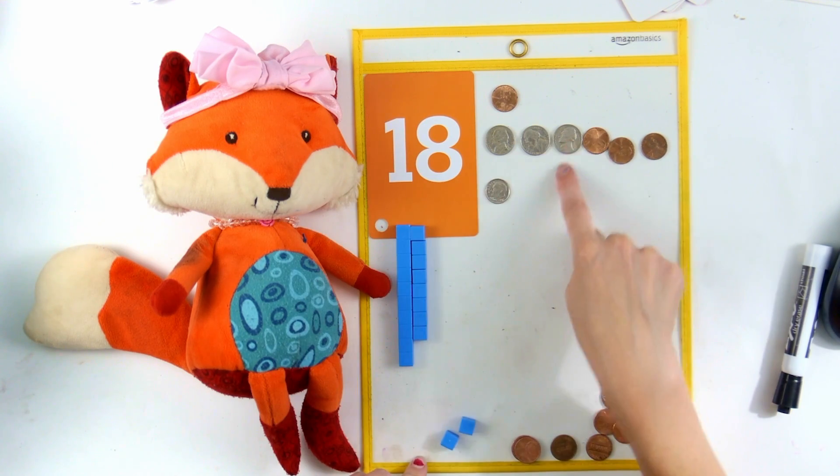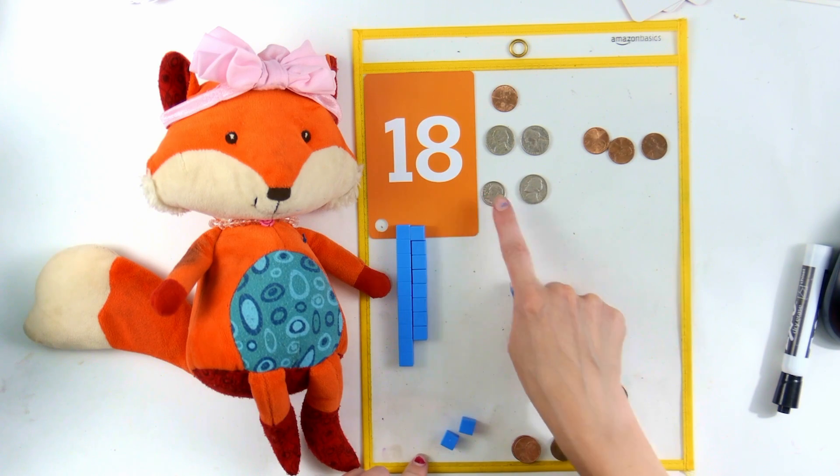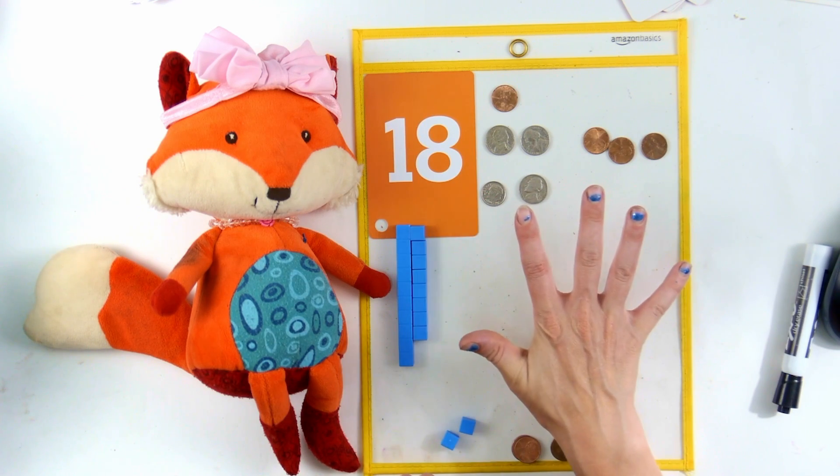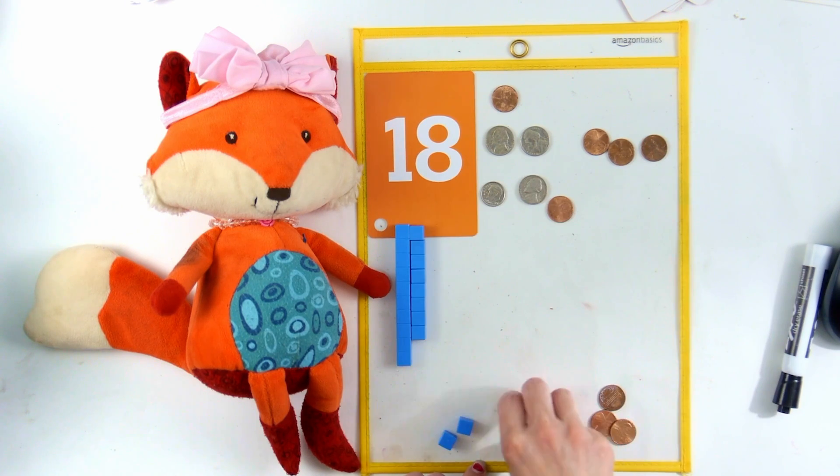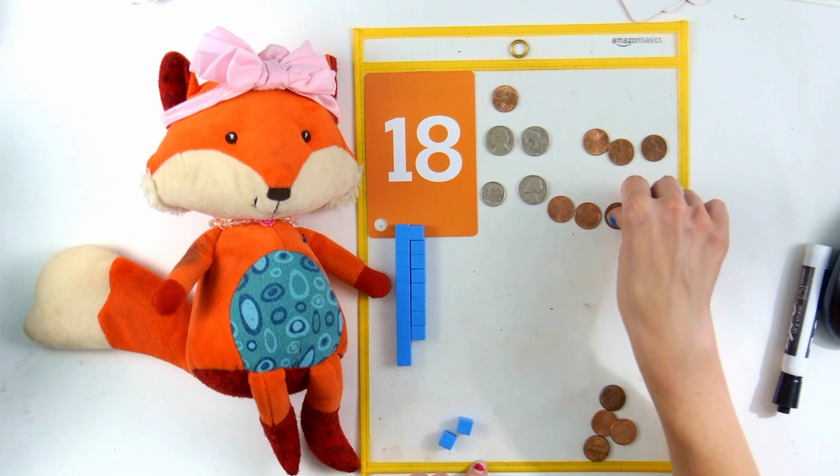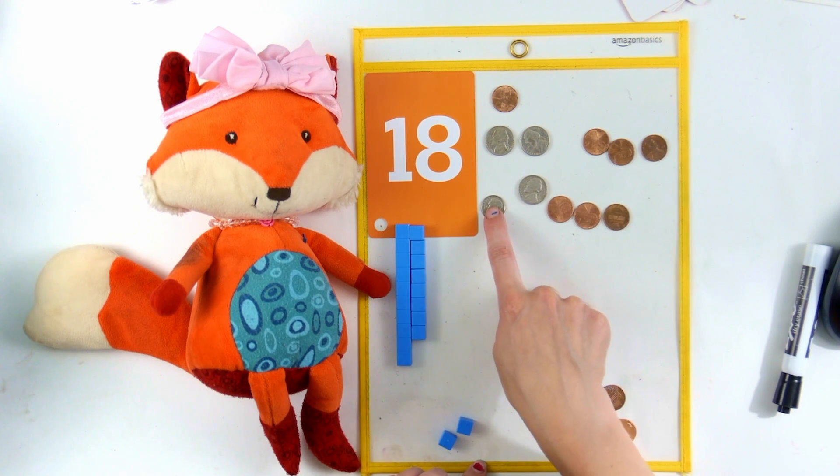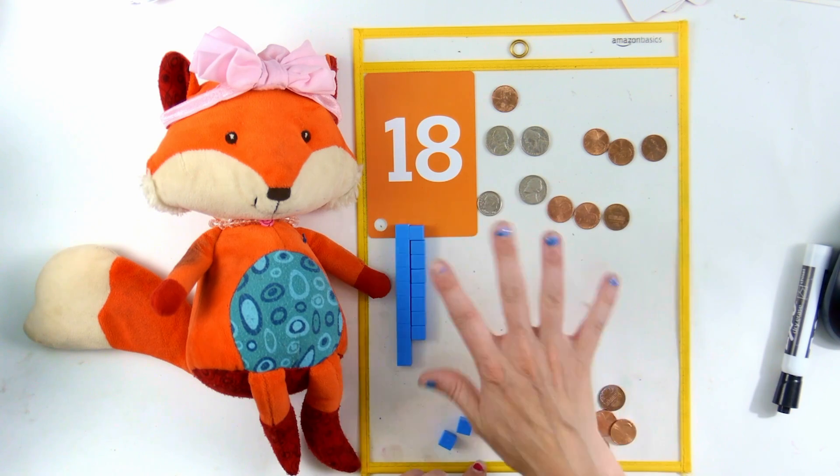Or, you can find a dime and a nickel. So, that's ten plus five more. Ten, eleven, twelve, thirteen, fourteen, fifteen, sixteen, seventeen, eighteen. And that's right. You can find a dime, which is worth ten. A nickel, which is worth five.